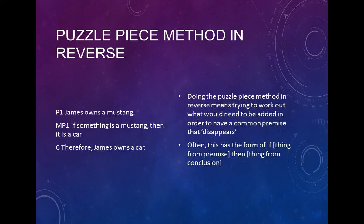You can think of this as a reverse puzzle piece method. Take the same method you use to detect dependent or independent relations and run it in reverse to figure out what the missing premise should be. Premise one: James owns a Mustang. Therefore: James owns a car. You want to create a premise that includes the bits of P1 and the conclusion — so the missing premise is: if something's a Mustang, then it's a car. You could also put it categorically: all Mustangs are cars. Either form works so long as it makes sense in context.